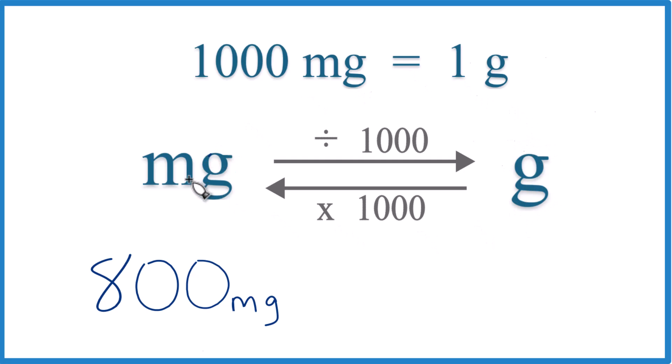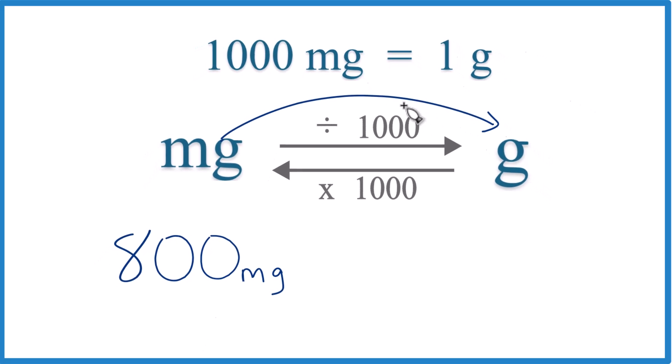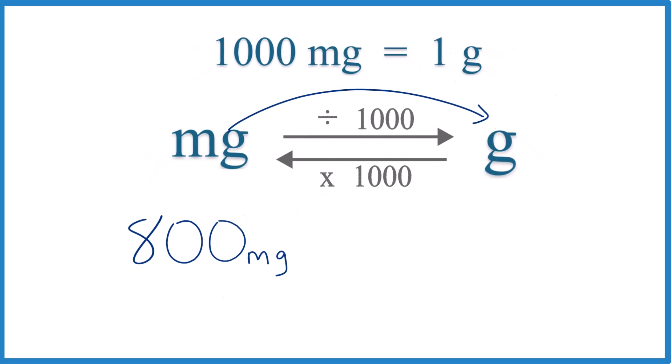So we have 800 milligrams. We're going from milligrams to grams, so we're going to divide by 1000 like this. Basically, we're just taking 800 divided by 1000, and that'll give us our grams.